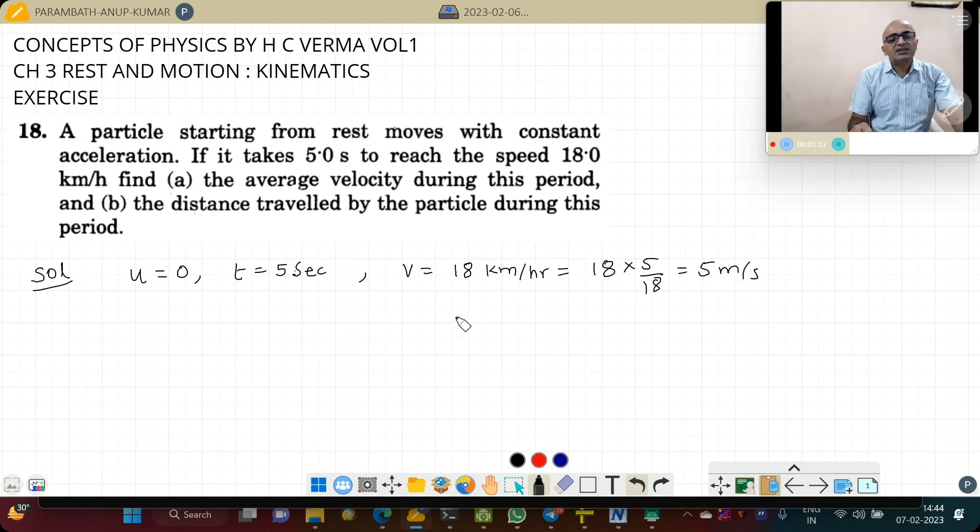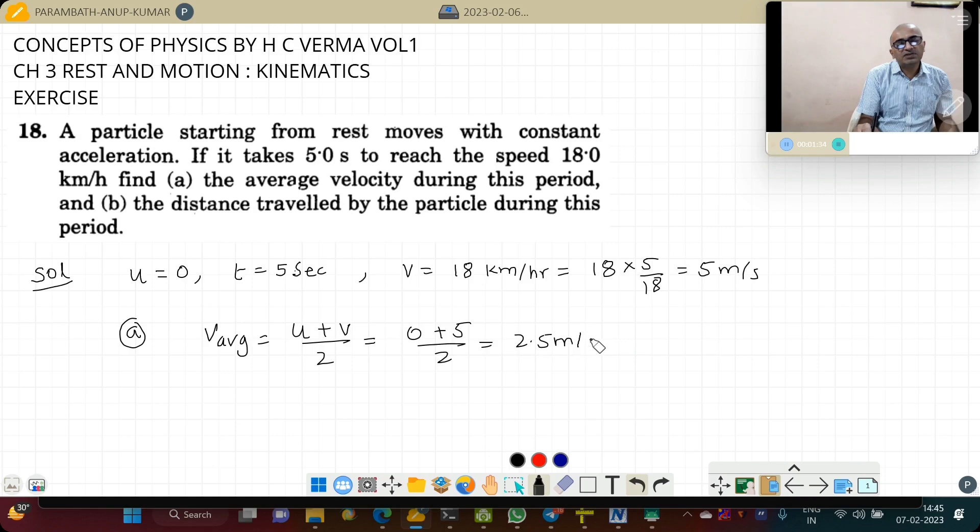Students, we have to find the average velocity during this period. It is mentioned it is constant acceleration. Therefore, the best way to find the average velocity is v_avg equals u plus v divided by 2. That is 0 plus 5 divided by 2, that is 2.5 meter per second.